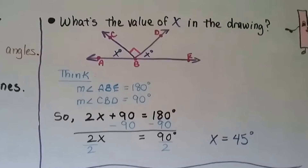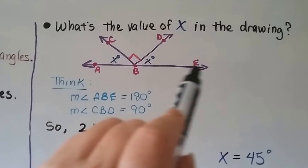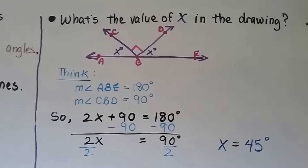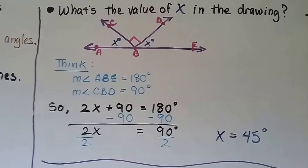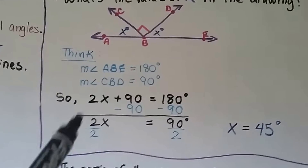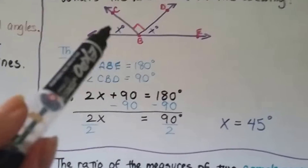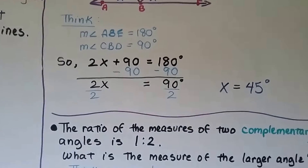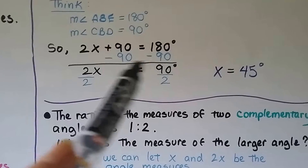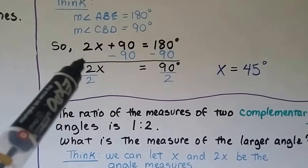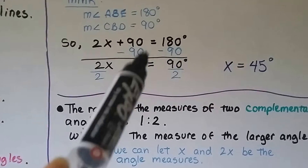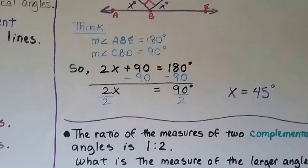What is the value of X in this drawing? We have a straight angle ABE (180 degrees) and a right angle CBD (90 degrees), plus 2X degrees. So the equation is 2X plus 90 equals 180. Subtracting 90 from both sides gives 2X equals 90. Dividing both sides by 2, we get X equals 45. So each angle is 45 degrees.